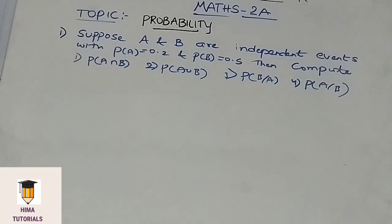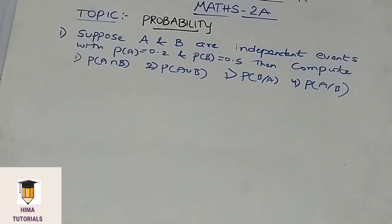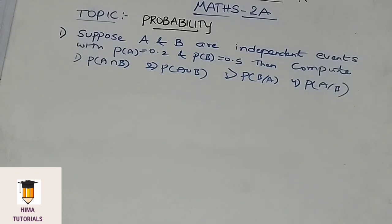Coming to the given question. Suppose A and B are independent events with P of A equal to 0.2 and P of B equal to 0.5. Then compute P of A intersection B, P of A union B, P of B given A, and P of A given B.